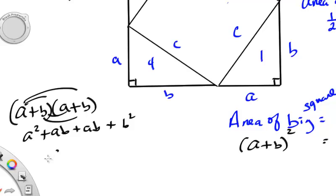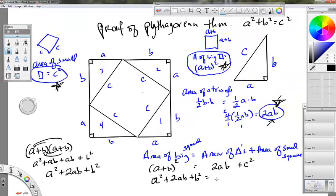So, this would become A squared plus 2AB plus B squared. And if we sub that in here, A squared plus 2AB plus B squared equals 2AB plus C squared.